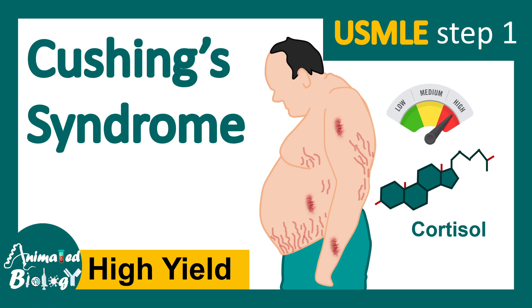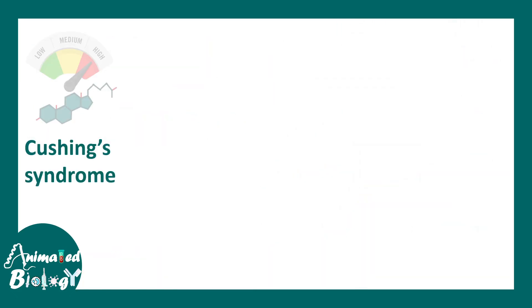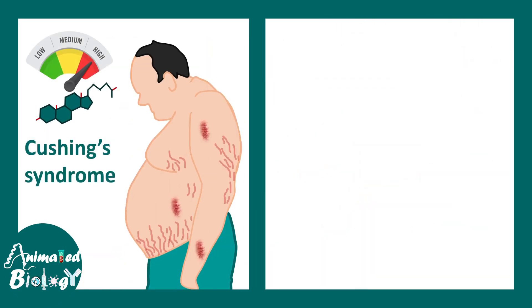In this USMLE Step 1 high yield video, let us talk about Cushing syndrome. Cushing syndrome is a condition characterized by increased levels of cortisol in the blood.